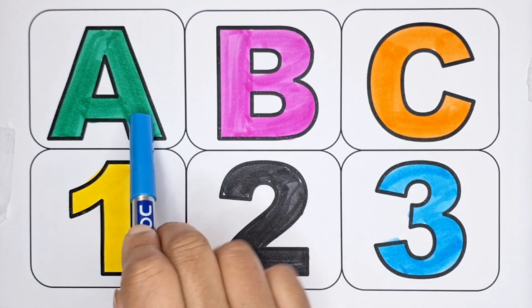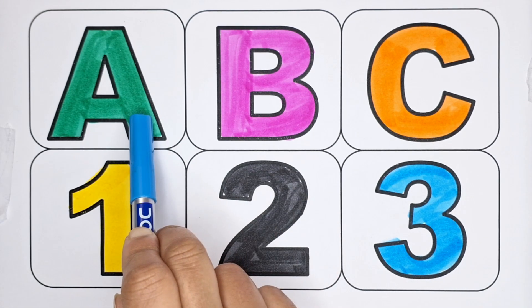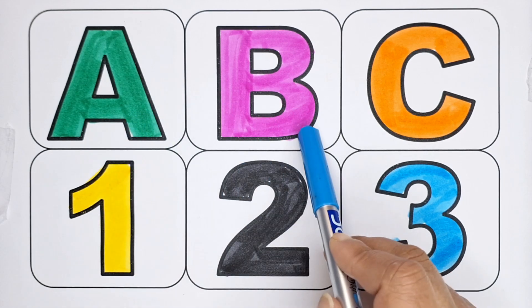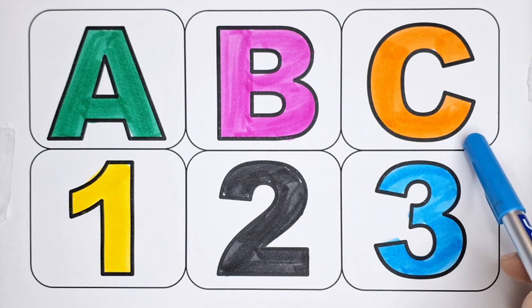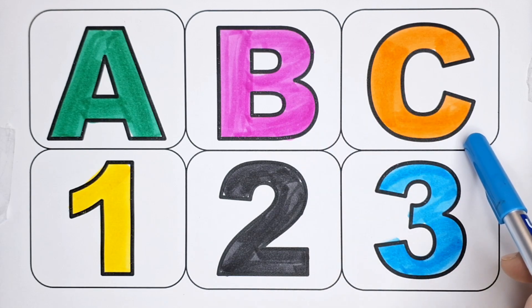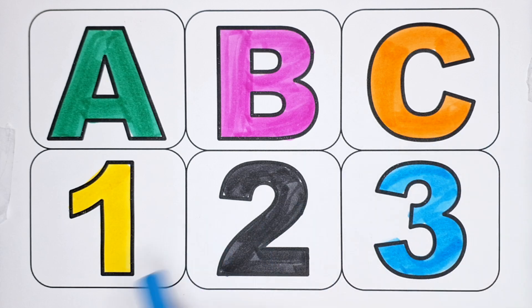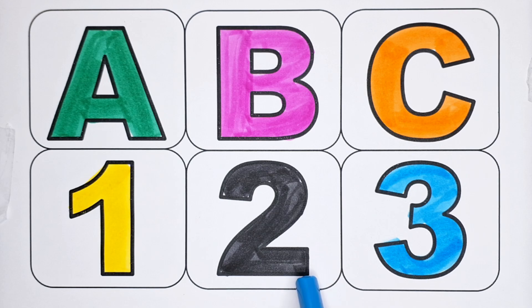A — A for ant, A for apple. B — B for baby, B for biscuits. C — C for candy, C for cake. Number 1 — O-N-E, 1. Number 2 — T-W-O, 2.